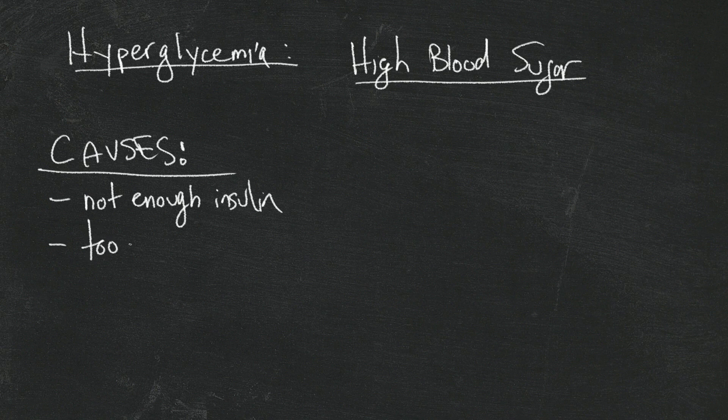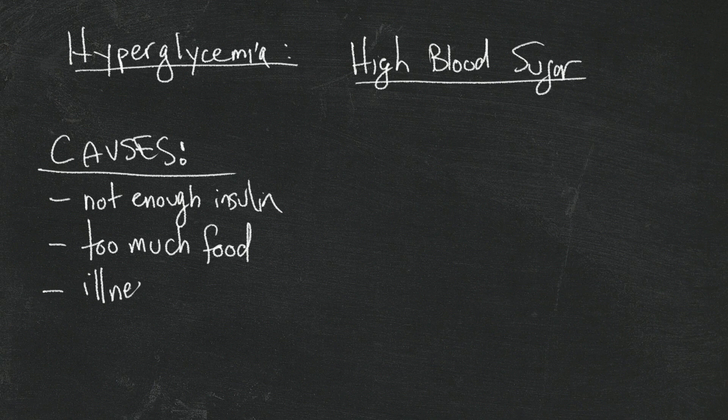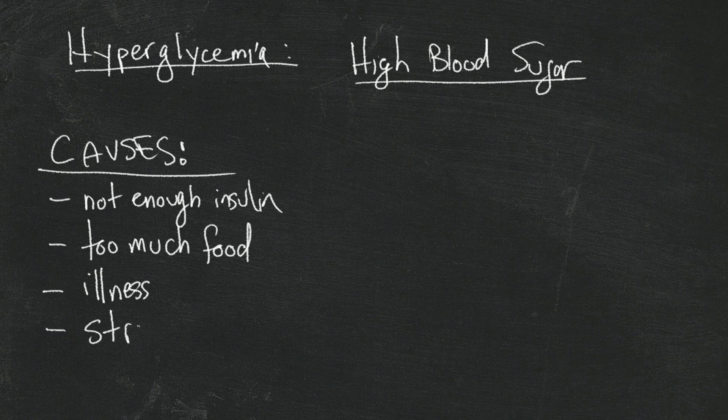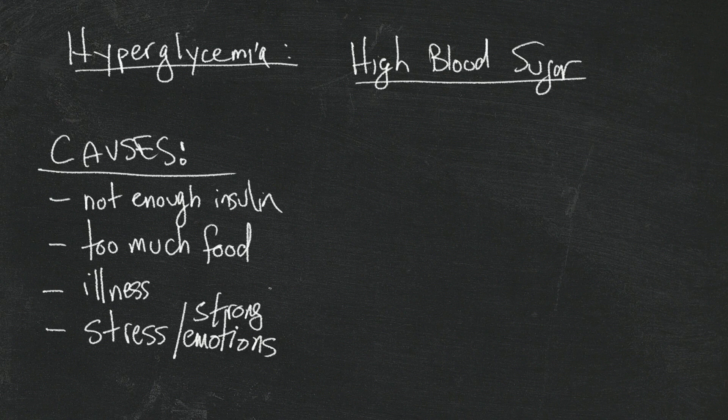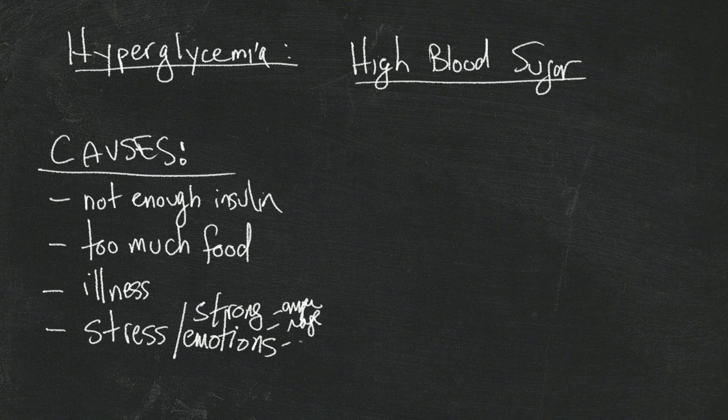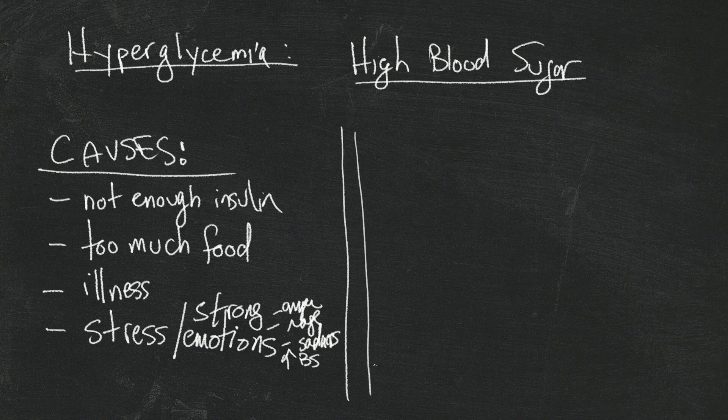Not enough insulin for whatever reason. Too much food - meaning you ate a lot and you didn't cover it adequately with enough insulin. You could be ill - getting sick will throw your diabetes out of whack because it's stress. And speaking of stress, stress or emotions - and let's say strong emotions, because I don't want anybody to get the impression that having diabetes you can't feel. That's not true at all. But strong emotions like anger, rage, some people even for sadness, makes their blood sugar go up.